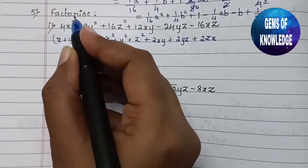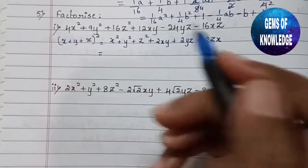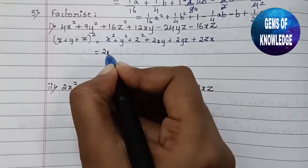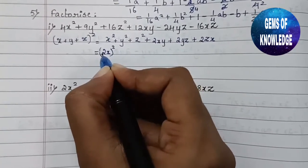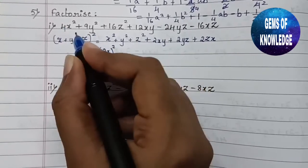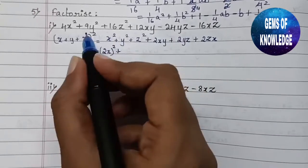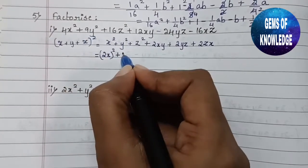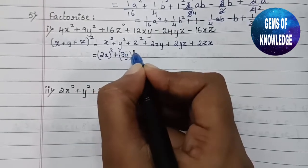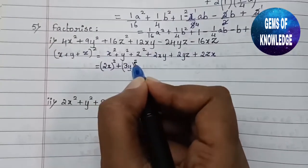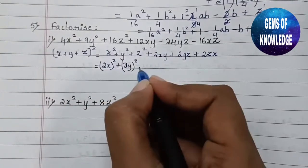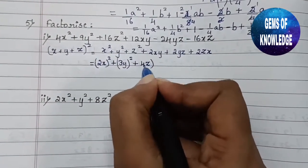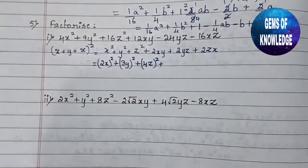Looking at 4x², this complete term must be our x² in the identity. Instead of writing 4, we can write it as (2x)², since 2² = 4 and x² remains. Next, 9y² can be written as (3y)², since 3² = 9. And 16z² can be written as (4z)². So our x term is 2x, y term is 3y, and z term is 4z — for now.